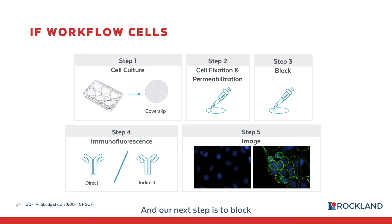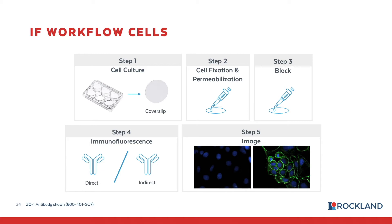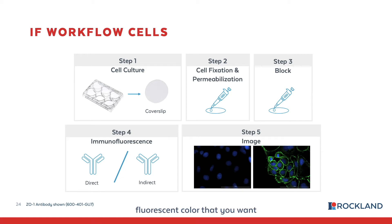The next step is to block to reduce background and nonspecific binding. Similar to IHC blocking, normal serum from the host of the secondary antibody in blocking buffer is a good choice. Then, the primary antibody is chosen for the antigen of interest, and secondary antibodies are chosen based on the primary antibody as well as the desired fluorescent color.